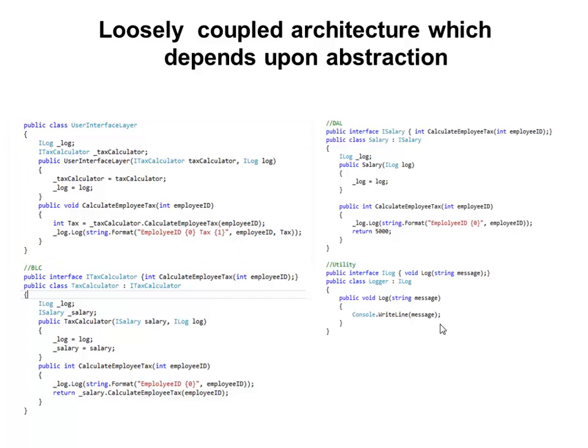As you can see in this implementation, there is no concrete class. The whole application has been built using abstraction, i.e., interfaces. The framework will automatically inject the dependencies when the user interface component is created. Let's look at how the framework injects the dependencies.